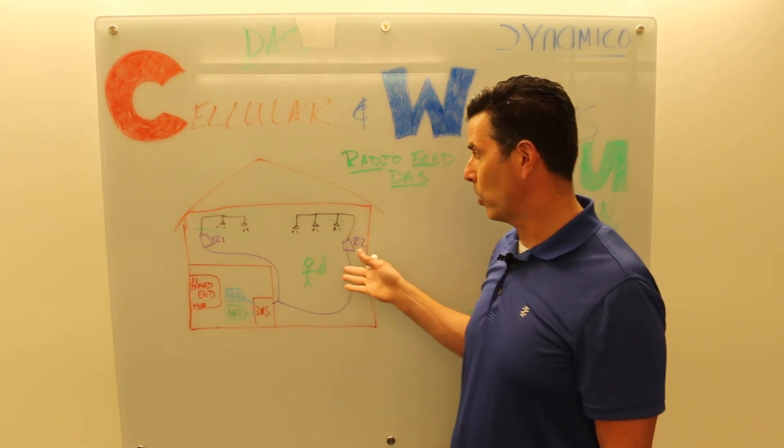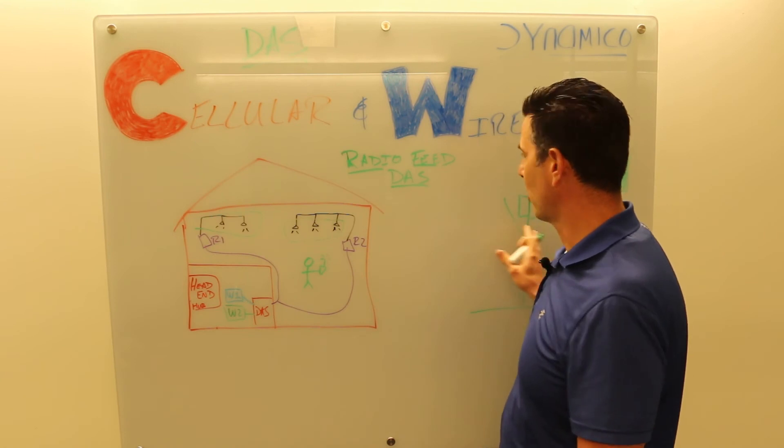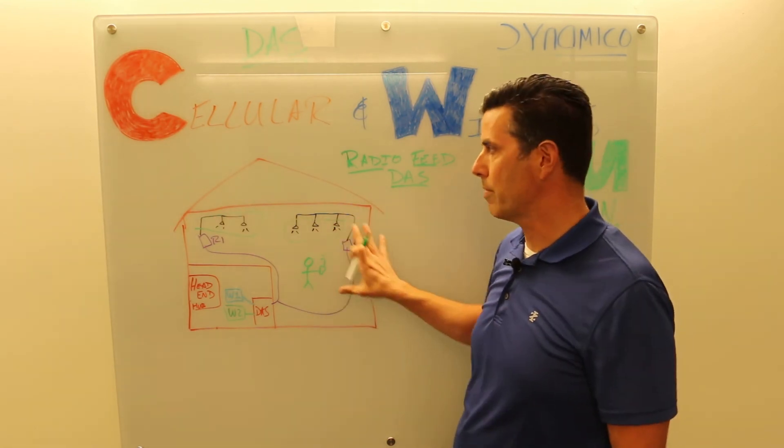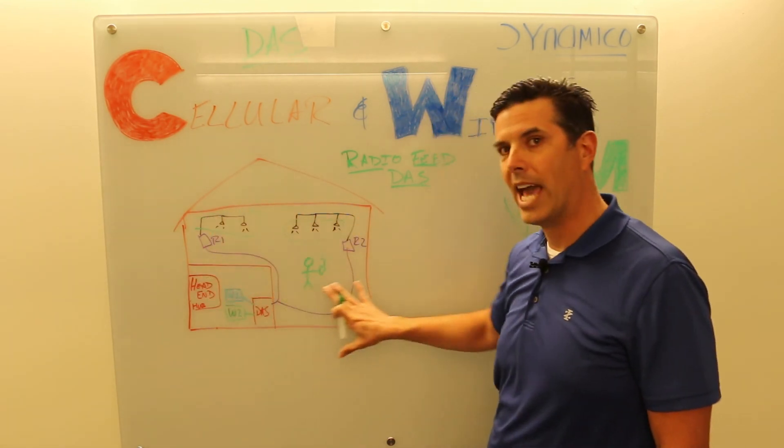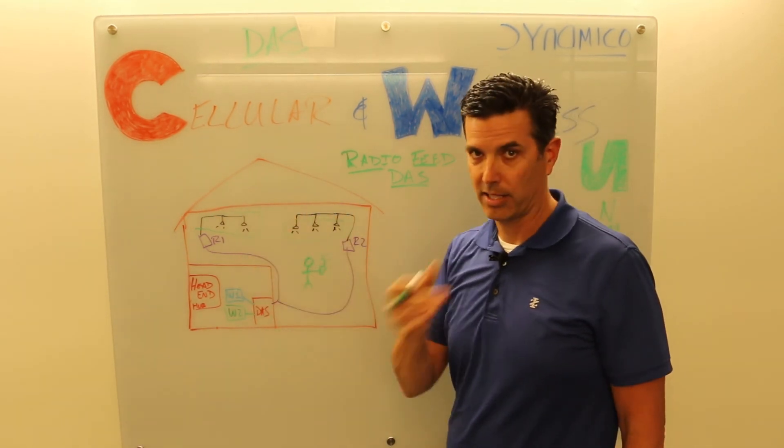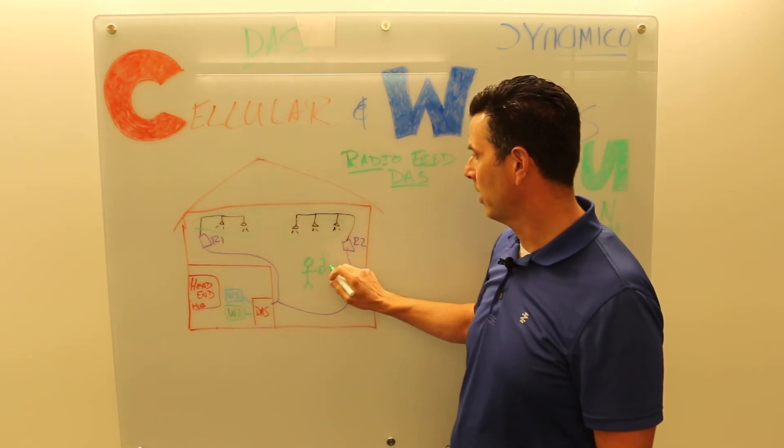But in cases where you've got some radio signals coming in from outdoors, you want to make sure that your indoor DAS is dominant and that is the signal that the mobile devices will prefer this signal.